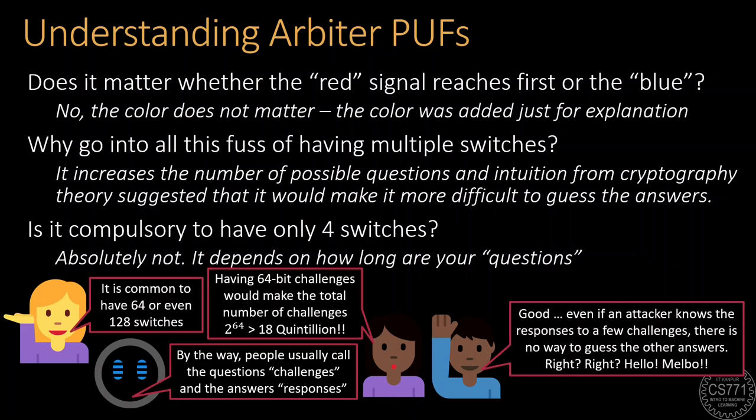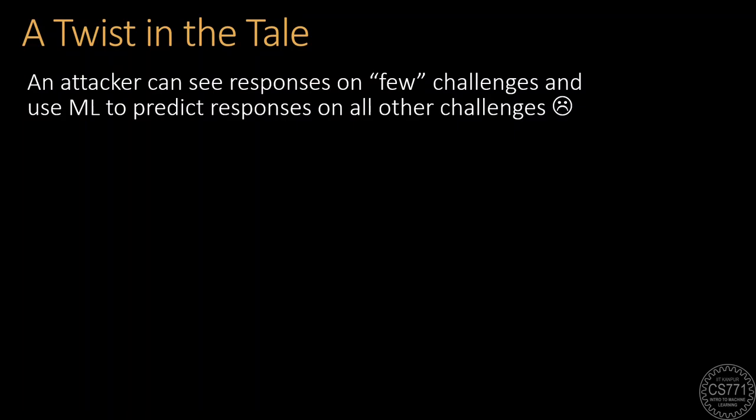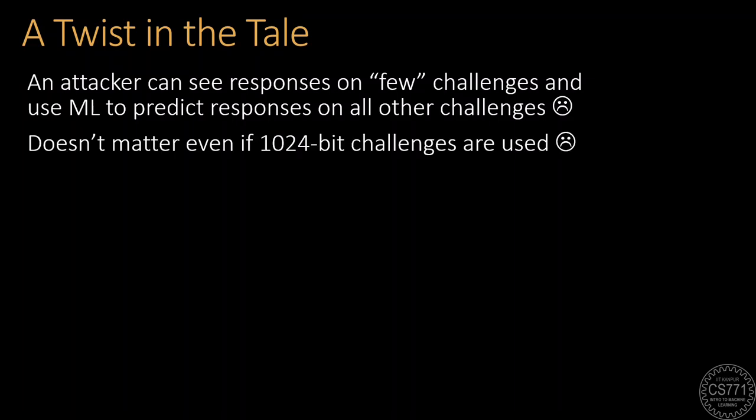However, unfortunately, this is not the case. It turns out that the arbiter PUF is quite vulnerable to machine learning attacks. If an attacker steals the responses to a few thousand challenges, then an ML model can be trained to correctly predict the responses on most other challenges. What is more, increasing the challenge lengths does not offer much more security.